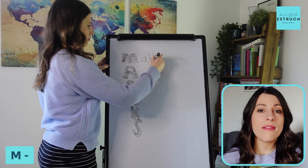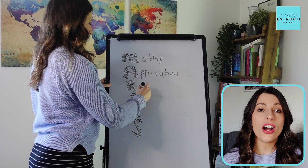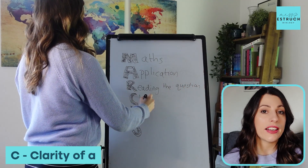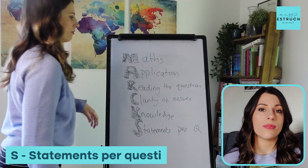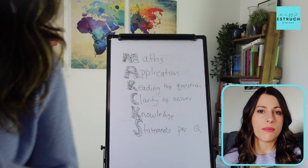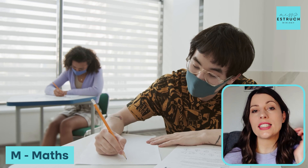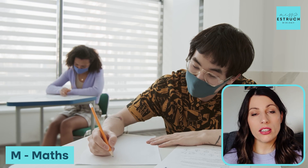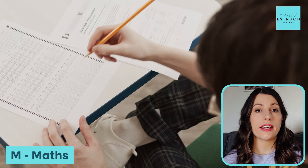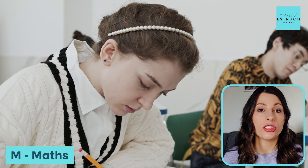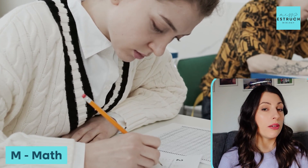MARKS analysis: M stands for maths, A is application, R is reading the question, C is clarity of answer, K is knowledge, and S is statements per question. What you need to do is go through your test and see anywhere that you've lost a mark. However many marks it might be per question, you need to identify what was the skill. So if it was a maths question and you lost two marks, you do two tallies in the table to represent two marks lost to a maths skill.